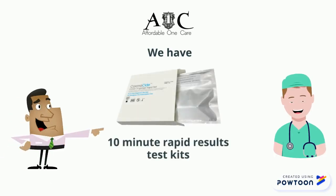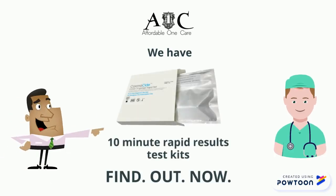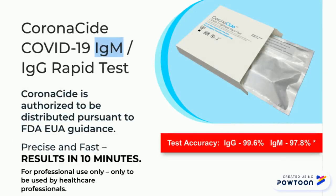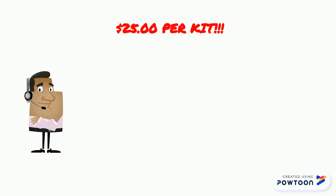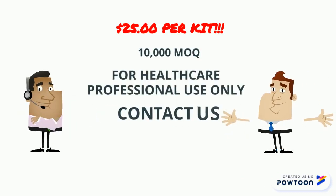We have Coronacyte, the 10-minute rapid results test kit, authorized to be distributed pursuant to FDA UA guidance. Precise and fast results in 10 minutes. $25 per kit. 10,000 minimum order quantity.